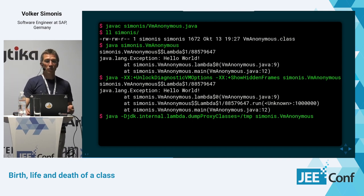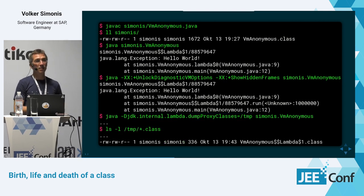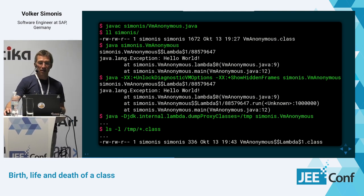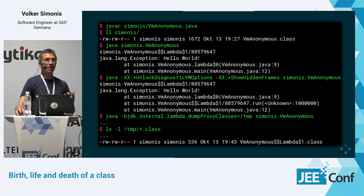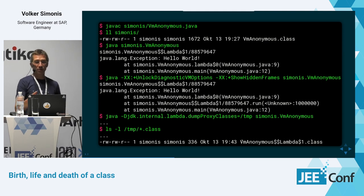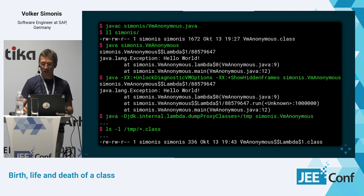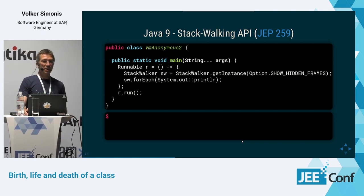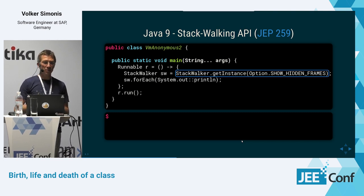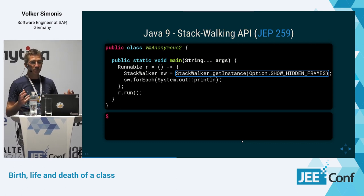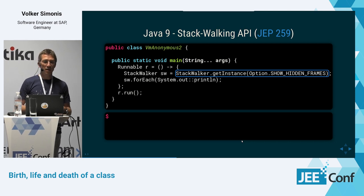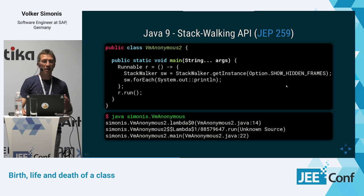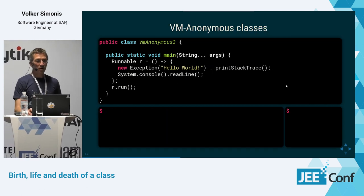There's another property you can set to inspect this class: -Djdk.internal.lambda.dumpProxyClasses=<path>. Running the program with this option causes the VM to dump the internally-generated lambda class to a class file in the specified directory, which you could then inspect with javap. Also worth mentioning: Java 9 introduced the StackWalking API, which gives programmatic access to hidden frames. By creating a StackWalker with the SHOW_HIDDEN_FRAMES option inside the Runnable, you can see the hidden frames without needing the -XX command-line option.